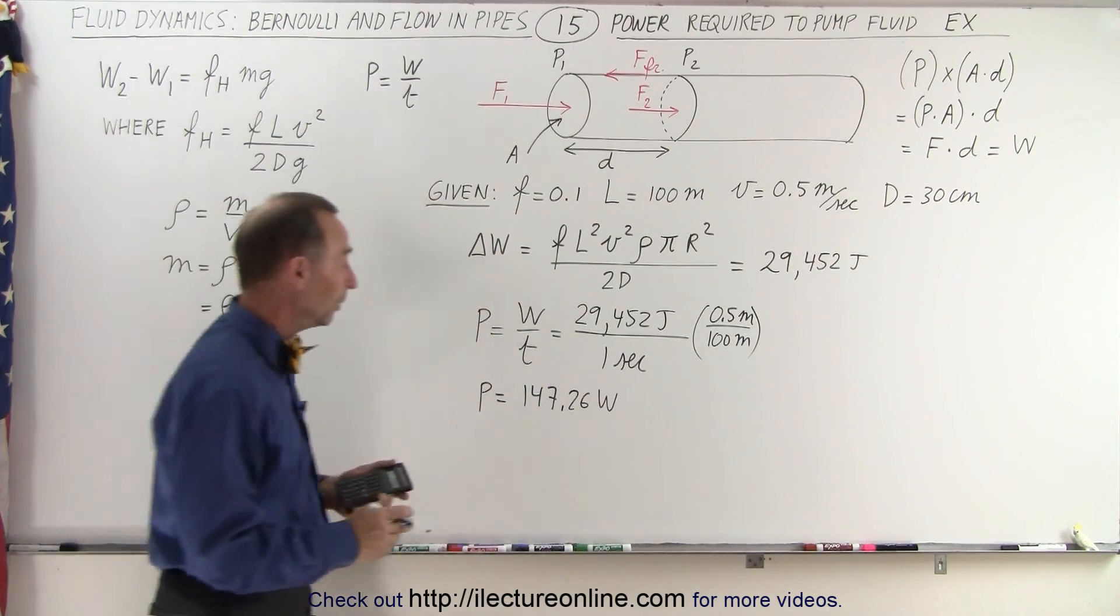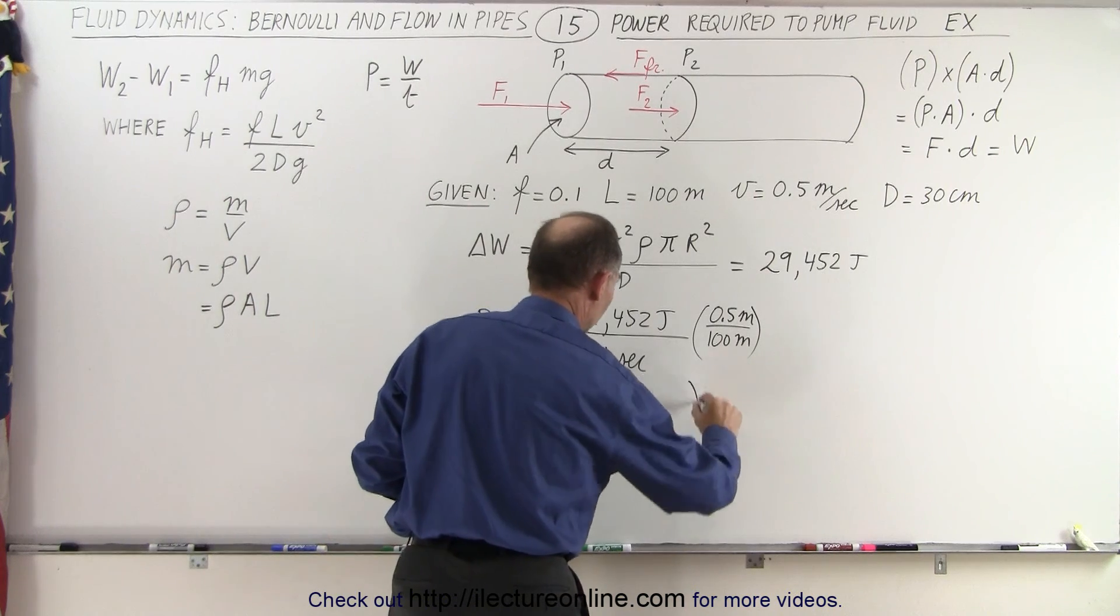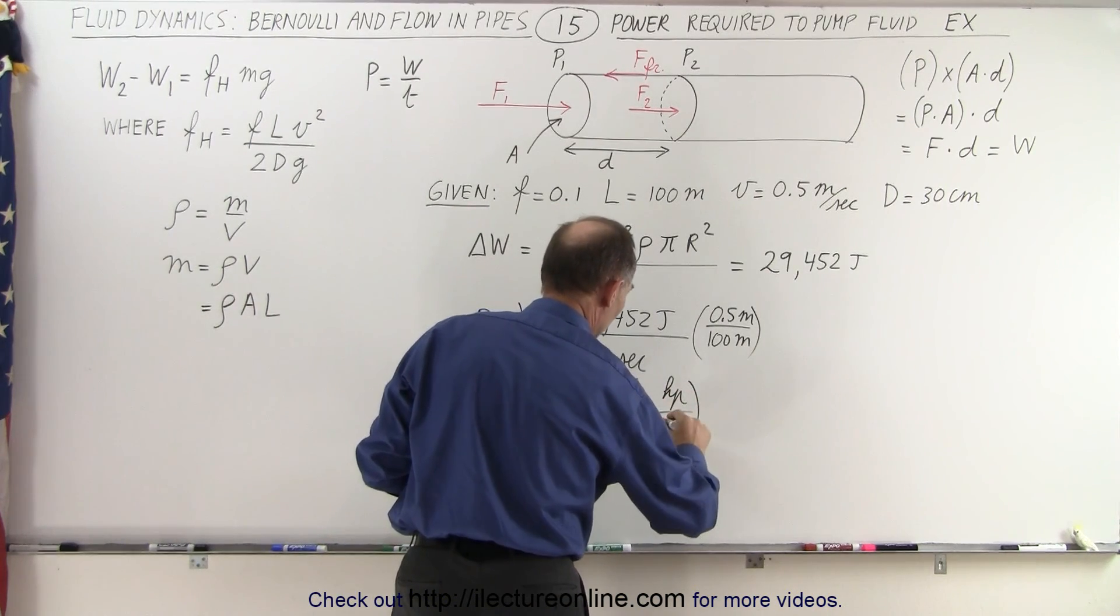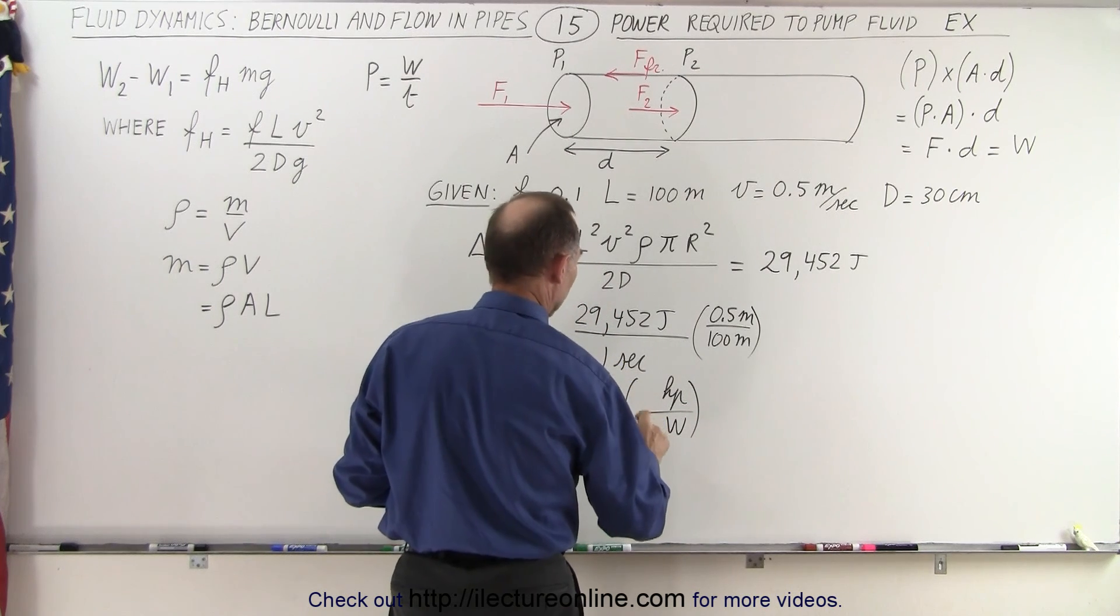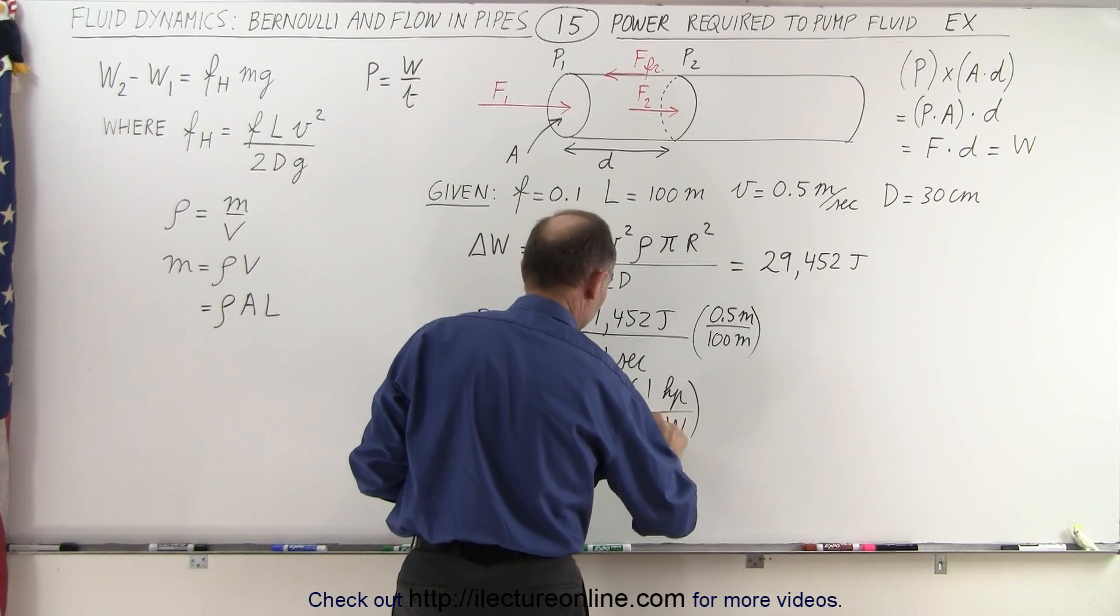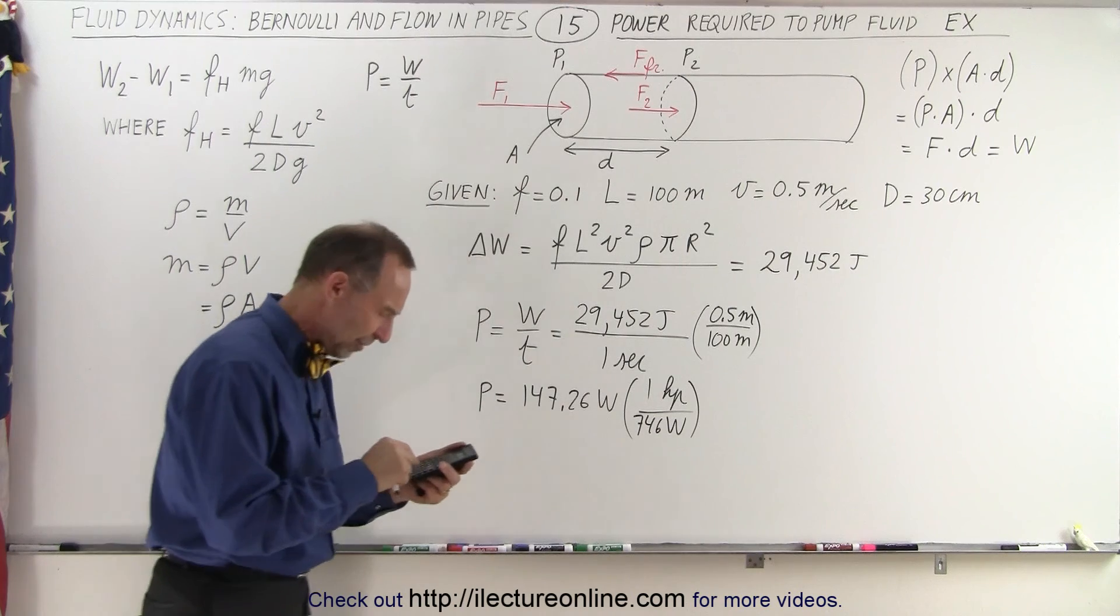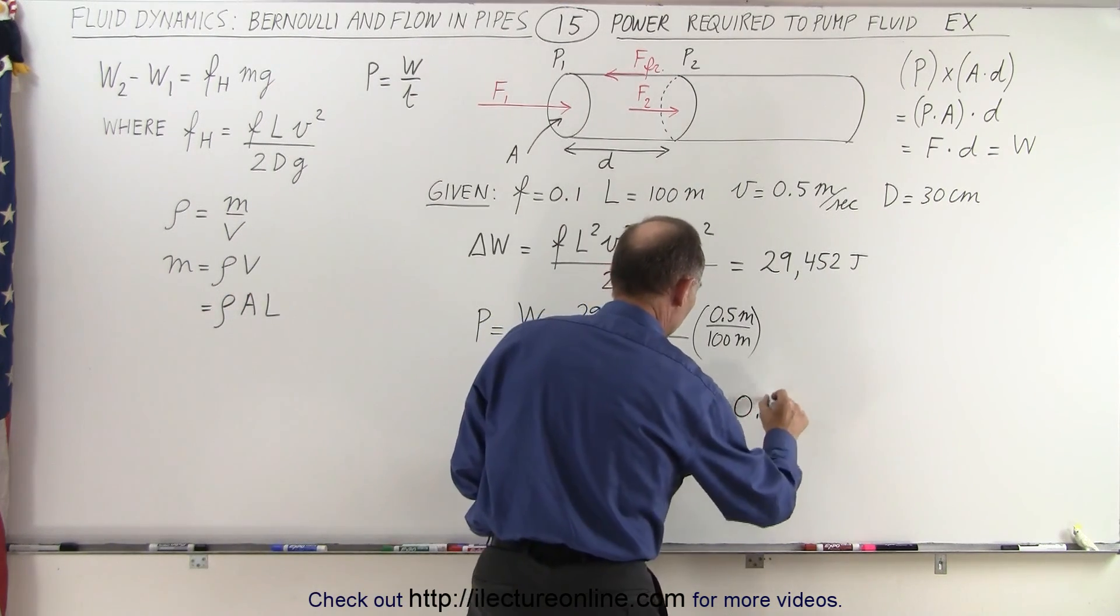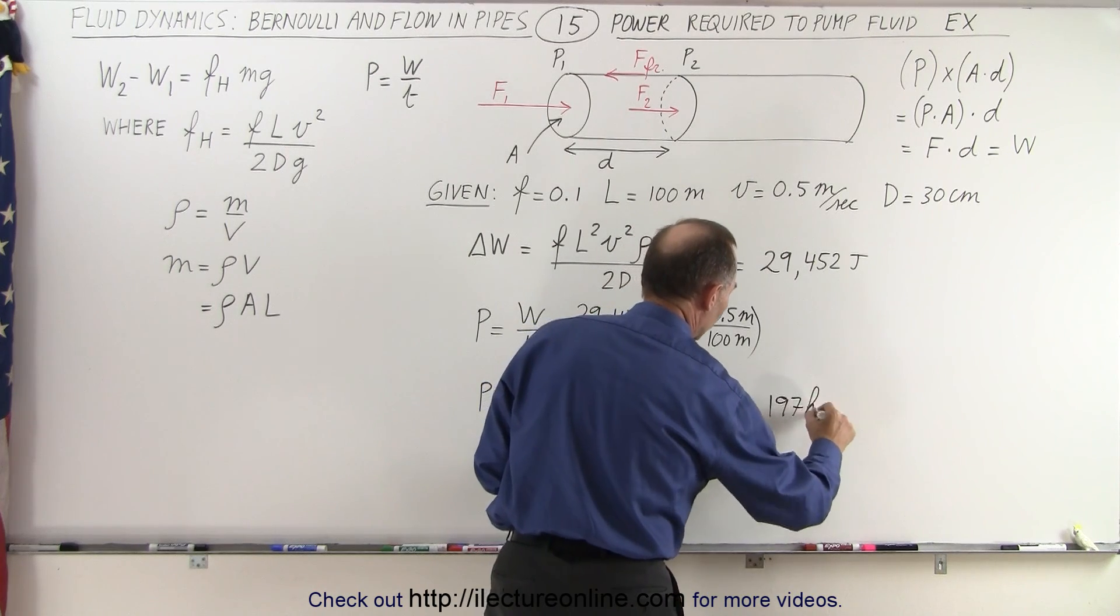Now let's convert that to horsepower. The conversion to horsepower is that we want horsepower here, we want watts here, and we know that one horsepower is 746 watts. So divide that by 746, and that takes about 0.197 horsepower.